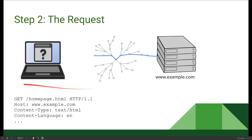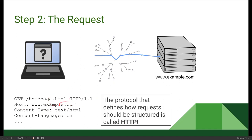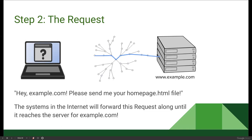That's the simplified version, but if we look at the actual request, it contains: GET /homepage.html HTTP/1.1, the host, content type, content language, and more — this is just a small snippet. The format for these requests is defined by a protocol called HTTP. This is much more complex than we need to know; all we really need to know is that our browser is asking example.com for its HTML homepage file. The systems throughout the internet forward this request until it reaches the server for example.com.